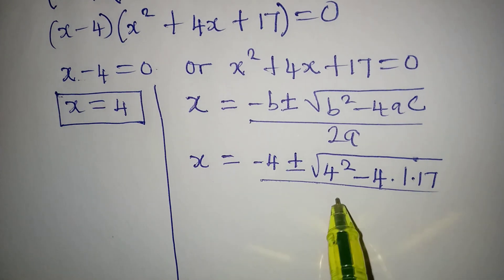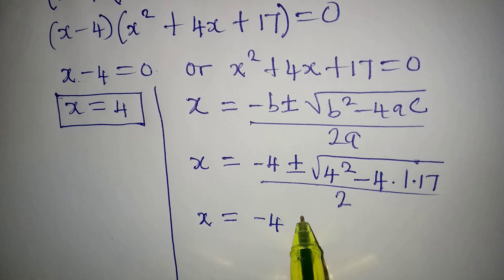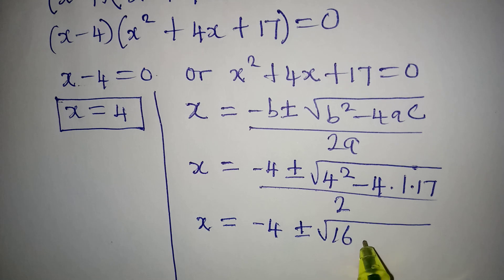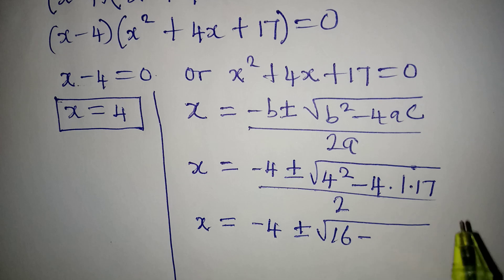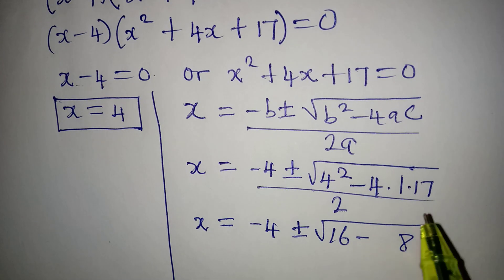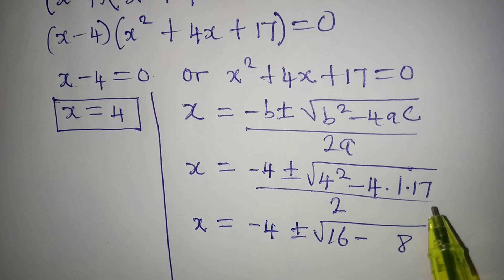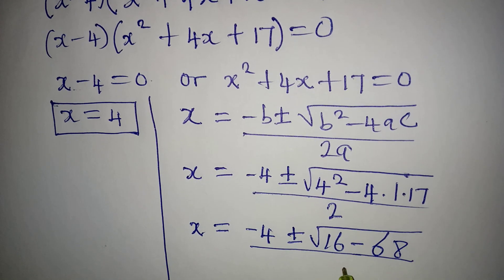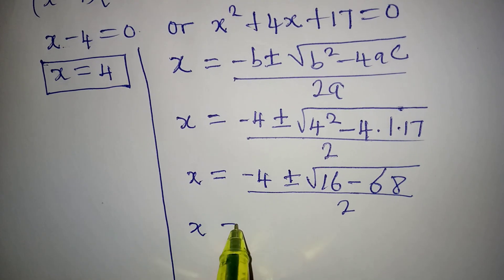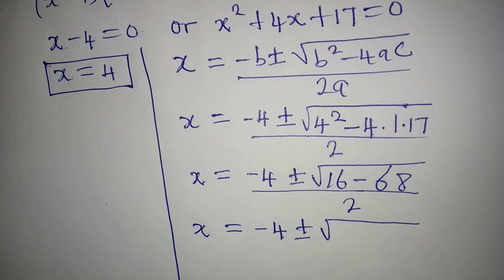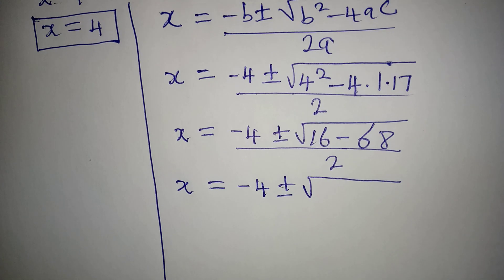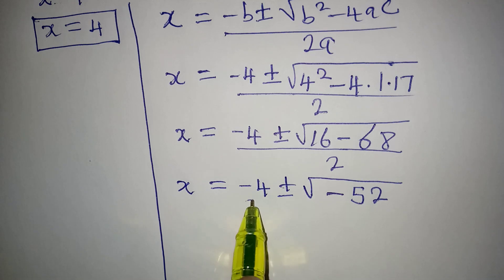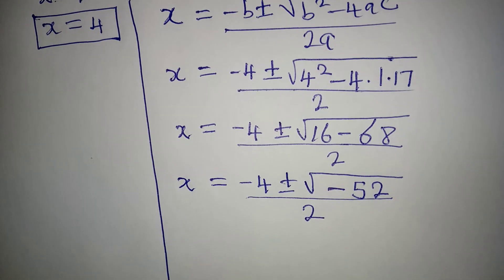So x equals minus 4 plus or minus square root of 16 minus 4 times 1 times 17, all over 2. Now 4 times 17 gives 68, so we have 16 minus 68, which gives minus 52. So x equals minus 4 plus or minus square root of minus 52, all over 2.